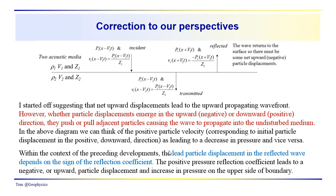Within the context of these developments, we want to emphasize that the lead particle displacement in the reflected wave depends on the sign of the reflection coefficient. A positive pressure reflection coefficient leads to a negative or upward particle displacement and an increase in pressure on the upper side of the boundary. Conversely, a positive velocity reflection coefficient will produce a decrease in pressure in the reflected wave.